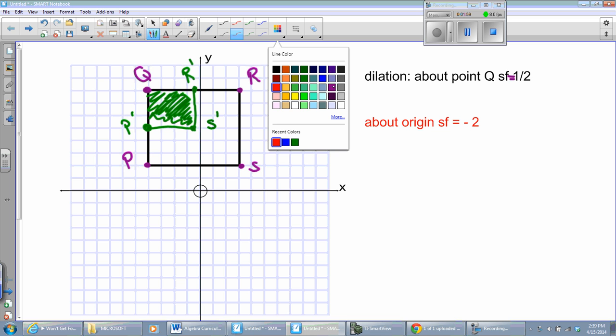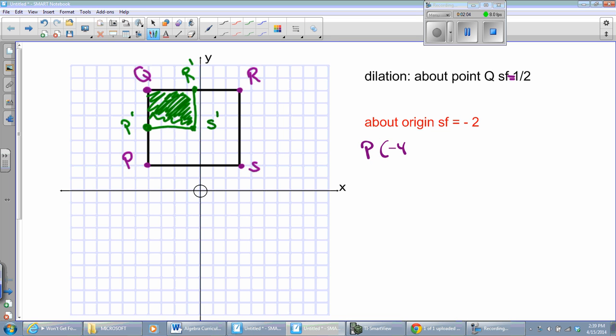about the origin with a scale factor of negative two. Well, for this one, I need the coordinates. So, let's see here. P's coordinates are negative four, two. Q's coordinates are negative four, eight. R's coordinates are at three, eight. And S's coordinates are at three, two. Well, for the scale factor of negative two, with the origin center, or about the origin,